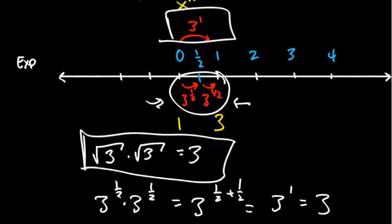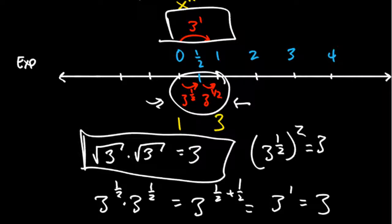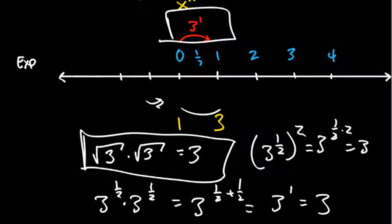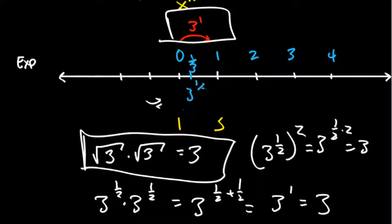So fractional exponents are just roots — square root, cube root, and so on. For a cube root, instead of going a half step, we go a third of the way: three to the one-third. If we do that three times, we get three — and that is exactly the definition of a cube root. So x to the one-third power is the cube root of x.